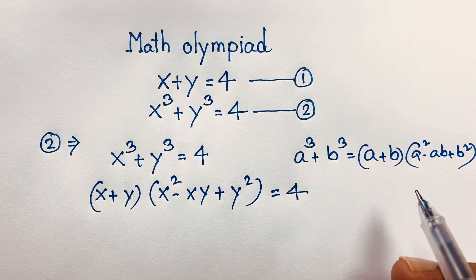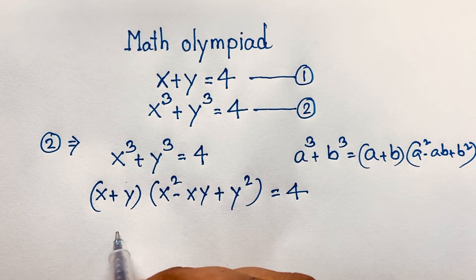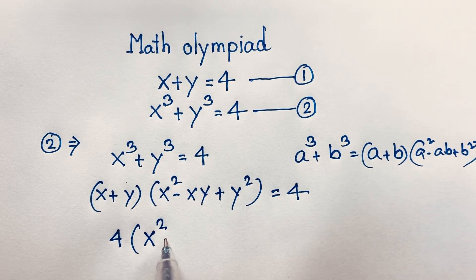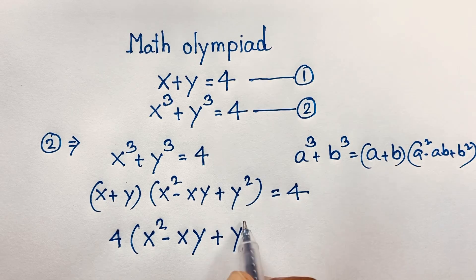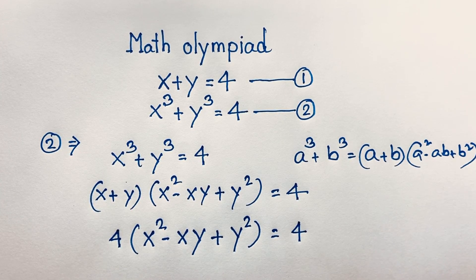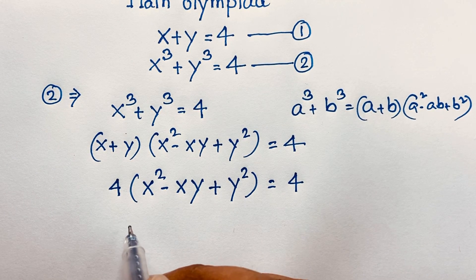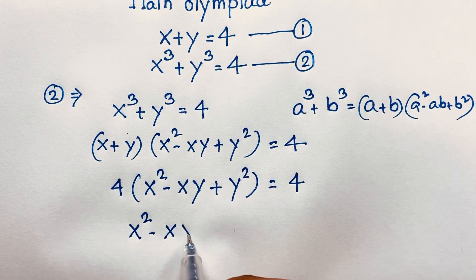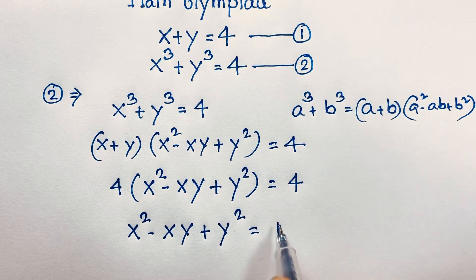Now, remember that our first equation x plus y is equal to 4. So I substitute 4 here. It will be 4 times x squared minus xy plus y squared is equal to 4. Then, if I divide both sides by 4, we find x squared minus xy plus y squared is equal to 1.